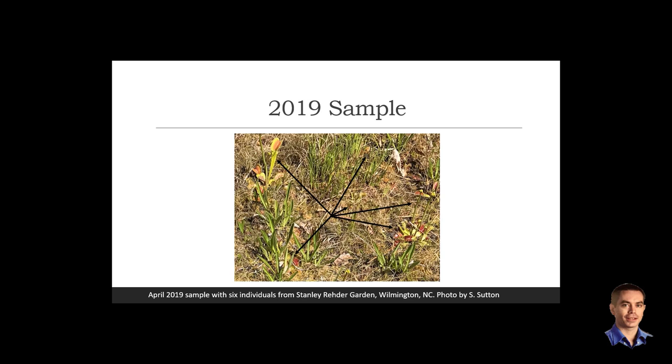This is a sample from 2019 and the arrows drawn are identifying individuals. So in this one you can also see that there are six different individuals that are obvious in this sample. These samples are not exactly completely random but they're meant to be random, so it's difficult to identify all the individuals in every sample.